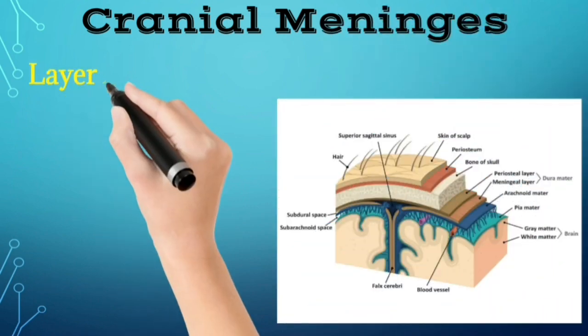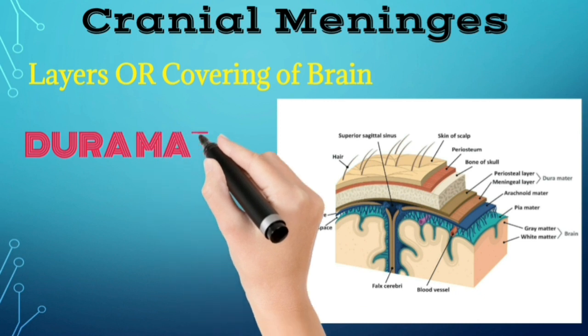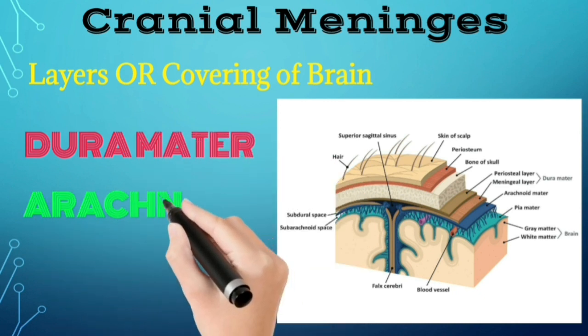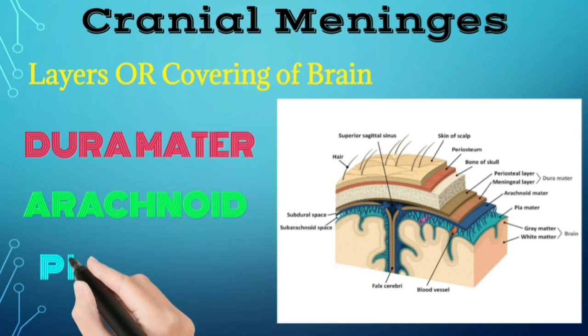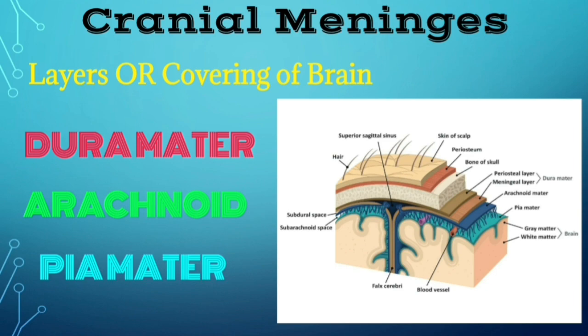The outer layer is called dura mater. A very thin middle layer is called arachnoid. And an inner layer which is in contact with the brain tissue is called pia mater.